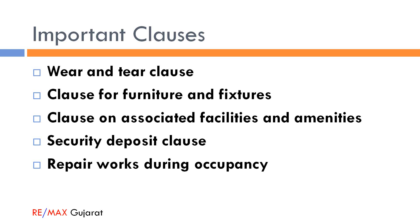Many properties come with associated facilities like parking space, swimming pool, club, and gym, which the owner is entitled to. However, these rights do not automatically transfer to the licensee or lessee unless a clause is inserted into the agreement specifying that such incidental amenities and associated facilities will be accessible by the occupant.